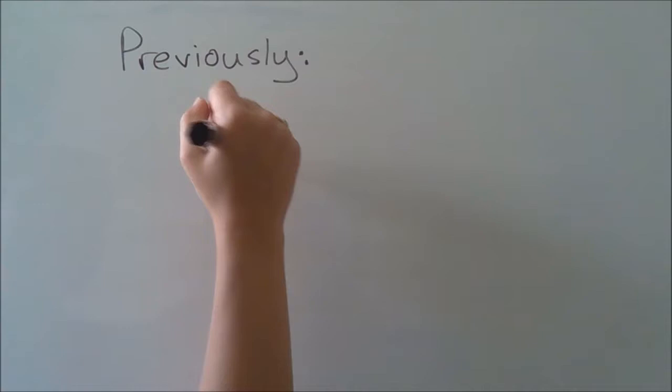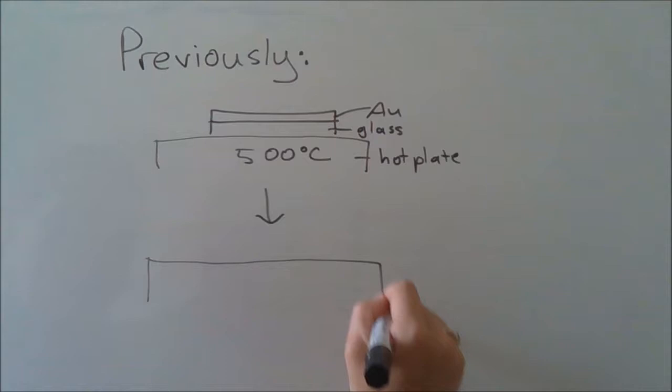Previous work in this lab has involved using a hot plate to thermally anneal a layer of gold into nano-islands. This summer, we used a technique known as direct laser writing to produce a thermal annealing effect in the gold.